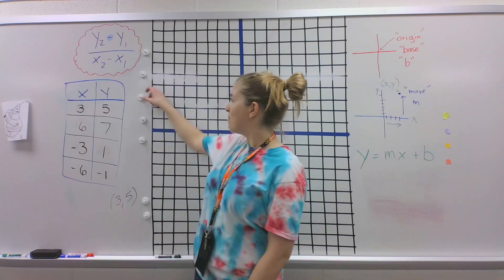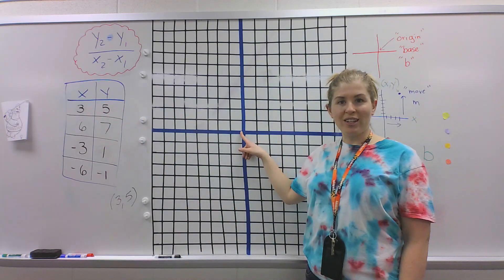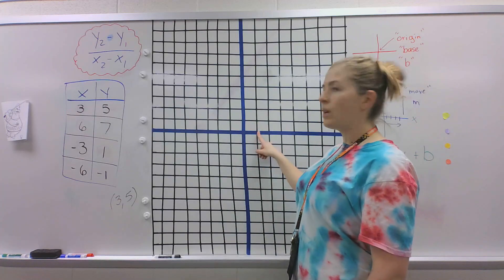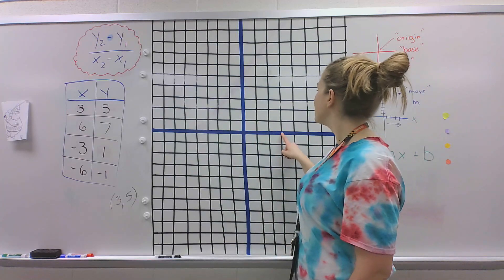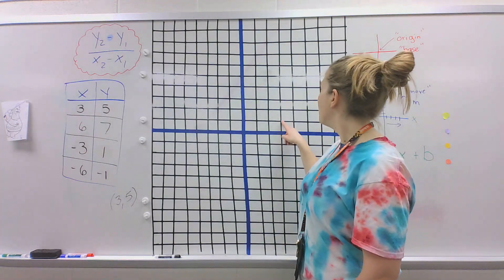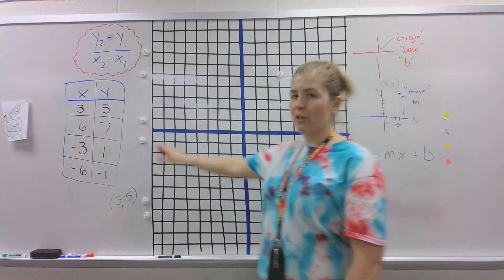So we're going to plot these points. 3 comma 5. Remember, we always start at the origin. We start in the middle, and it's positive. So we're going to count over 3: 1, 2, 3 positive. And then we're going to go up 5. So it's always x comma y. Okay. 1, 2, 3, 4, 5. This would be our first point.